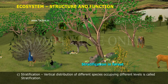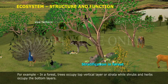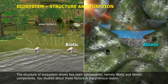C. Stratification — vertical distribution of different species occupying different levels is called stratification. For example, in a forest, trees occupy the top vertical layer or strata while shrubs and herbs occupy the bottom layers. The structure of an ecosystem shows two main components, namely biotic and abiotic components.